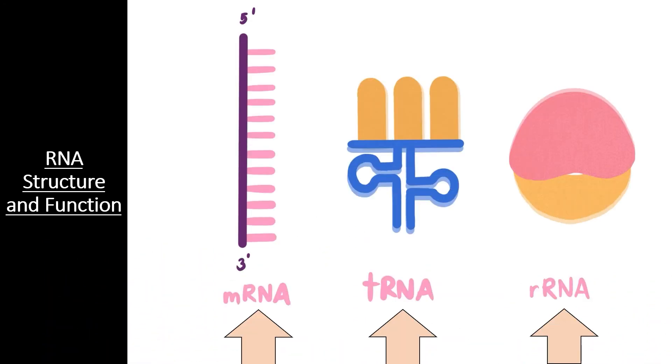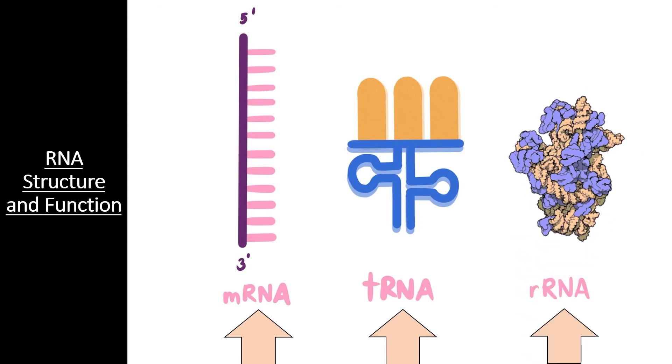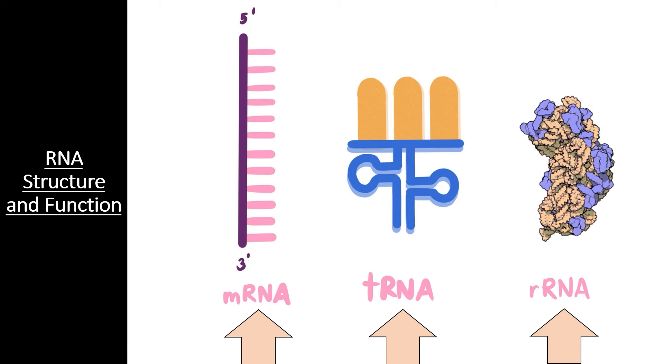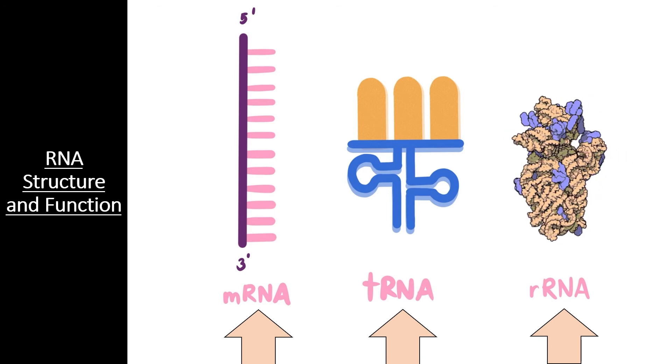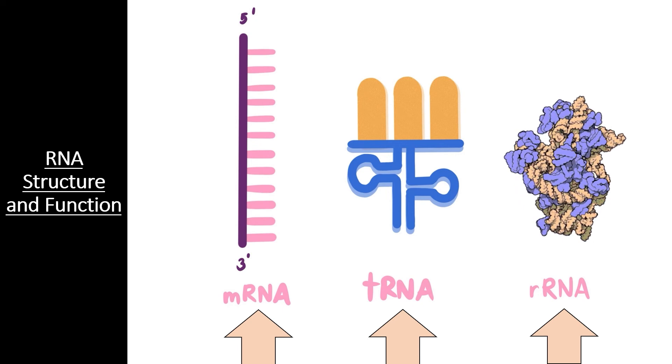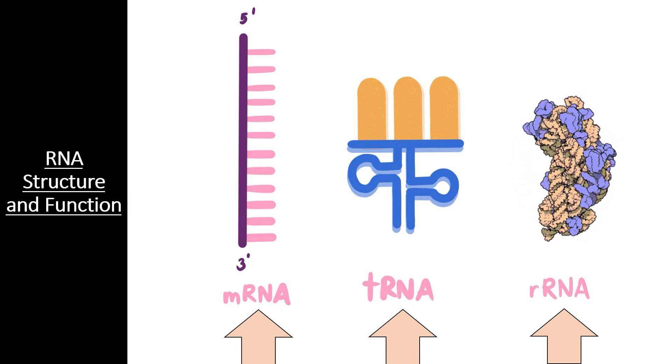The cell also needs ribosomal RNA and transfer RNA in order to translate this nucleic acid sequence into a sequence of amino acids. Ribosomal RNA forms a quaternary structure with several proteins to create a functional ribosome, as you can see here with the ribosomal RNA shown in light orange.